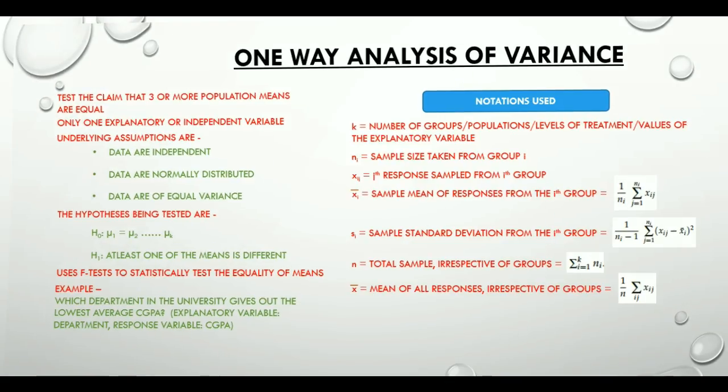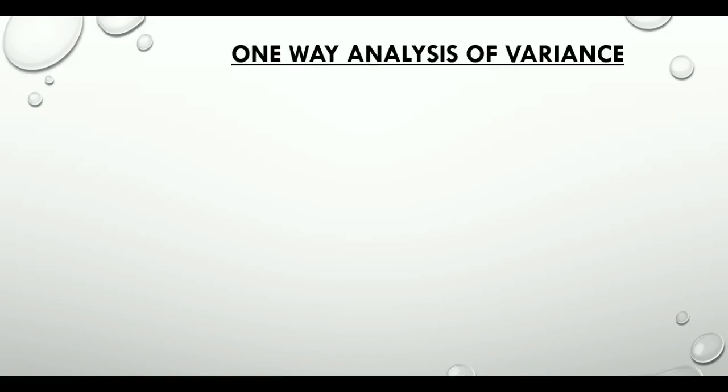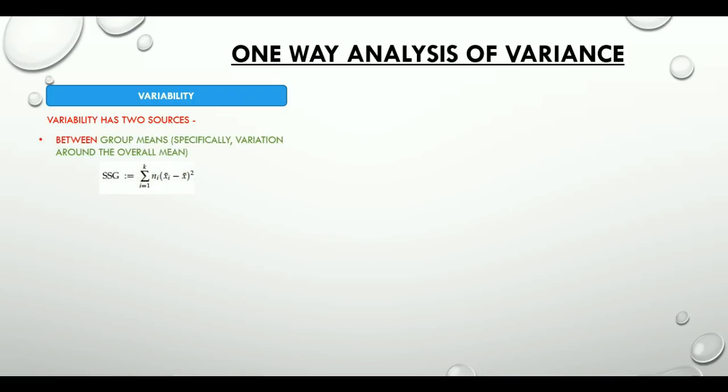There are different variabilities that we come across in a one-way ANOVA study. These variabilities have two sources. First is the between group, specifically variation around the overall mean, also called as treatment group.